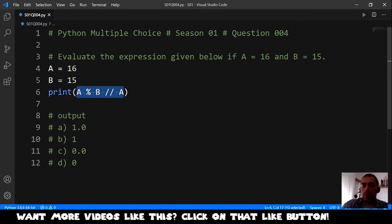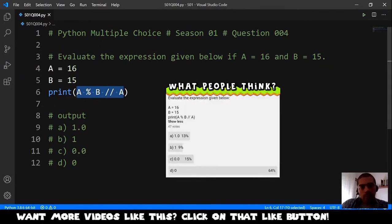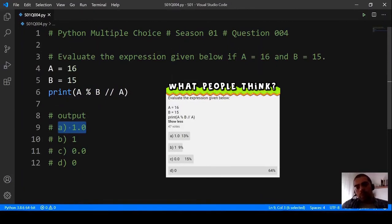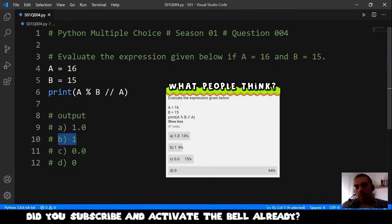And the possible outputs are A 1.0, B just 1, C 0.0, and D just 0.